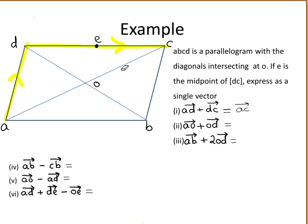The second part of the question asks you to find vector AO plus vector OD. Again we can use the triangle law to add these two vectors, and our answer is the vector AD, found using the triangle law.